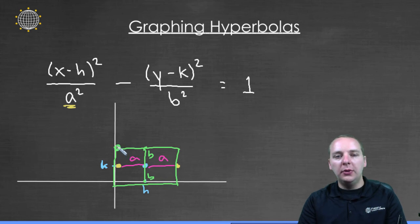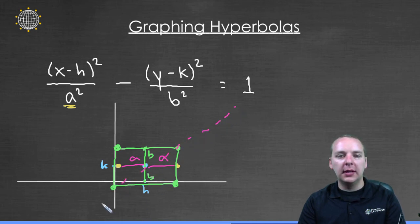Now what we're going to do is connect the opposite corners of this box in a straight line. So, through two of the corners it would look something like this, and through the opposite two corners it would look something like this.